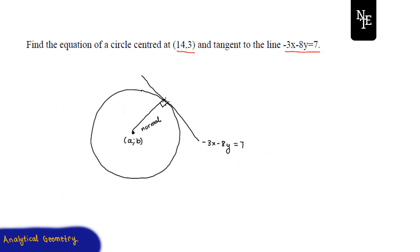The important thing here is this point of tangency — this unknown point (x₁, y₁). If we can find this point of tangency, then by the distance formula we can find this distance, which is the radius of our circle.